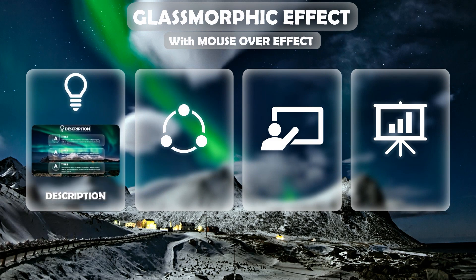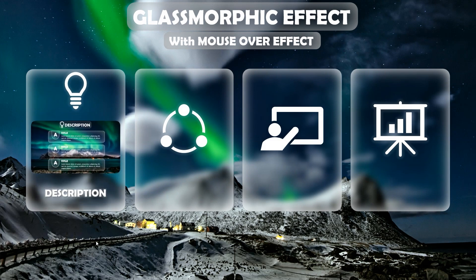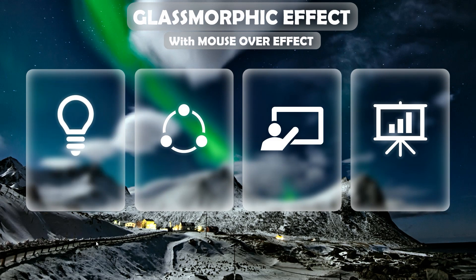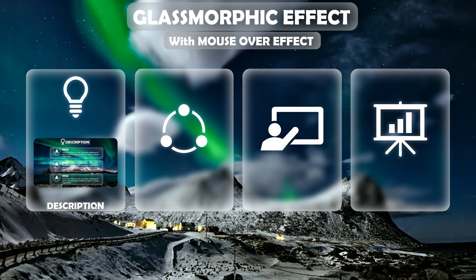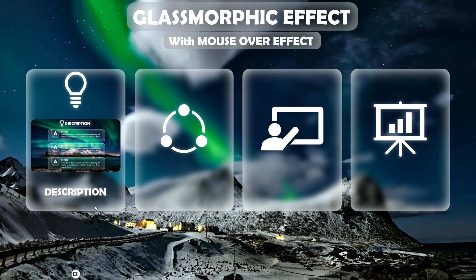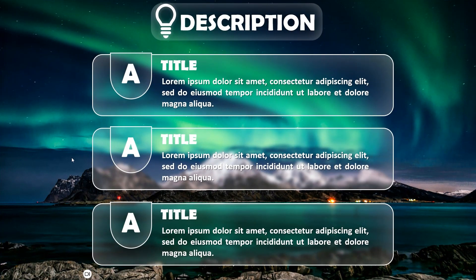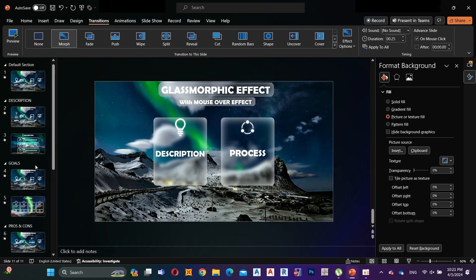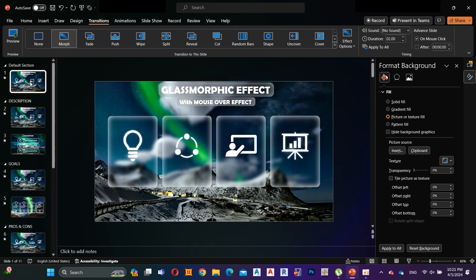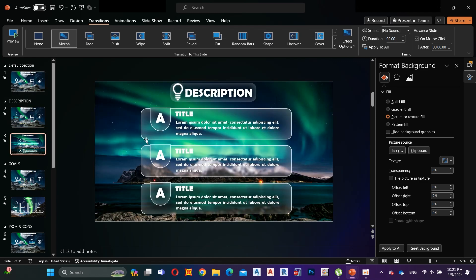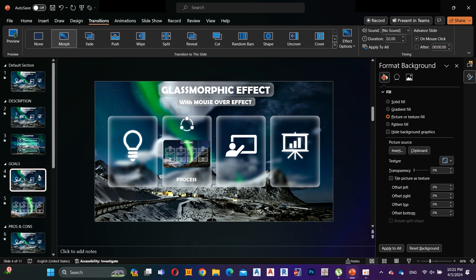In my slide, once I go over any shape, a zoom icon appears and we can go through that slide zoom. Let's see how to create that. In my slide there are four sections — each of these sections contains one mouse over effect slide with a zooming slide.